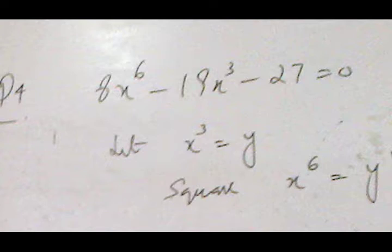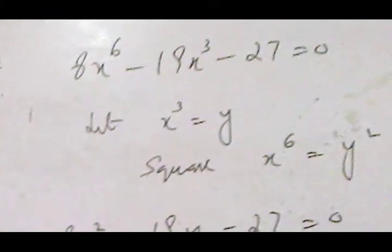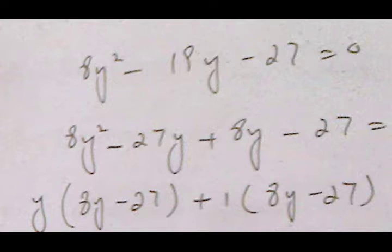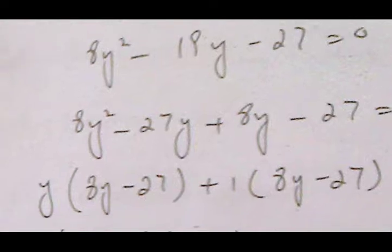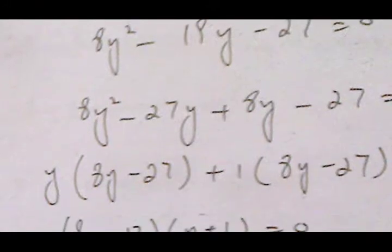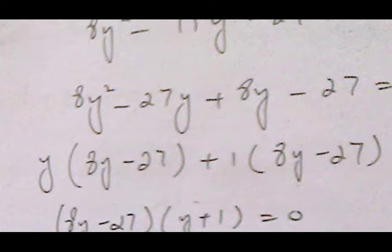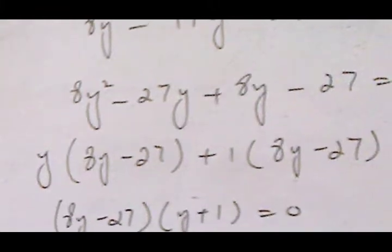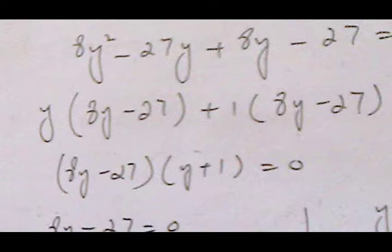In the next question we have degree 6. We reduce to quadratic by letting x³ equal to y, so x⁶ equals y². This becomes quadratic form. We factorize: 8 multiplied by 27 gives factors, and when we subtract these numbers they make 19. We take y common from the first two values and 1 from the second two values.